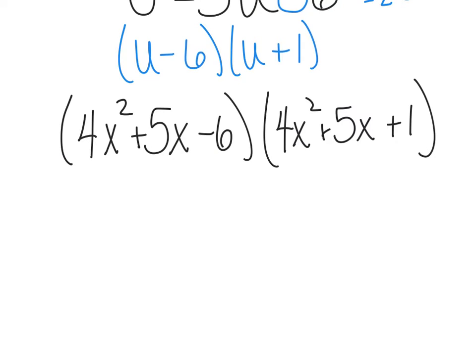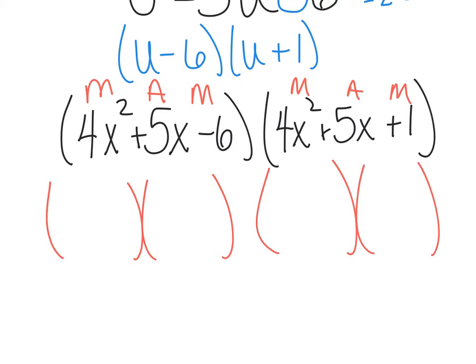I'm going to say MAM again, multiply, add, multiply. I have to refactor these. I know this one's a little uglier because of the 4s. It could be 4 and 1 or 2 and 2. This is just that guess and check. It's just trial and error. You just got to try it until it works. I'm going to start with 4 and 1. This could be 6 and 1 or 2 and 3.